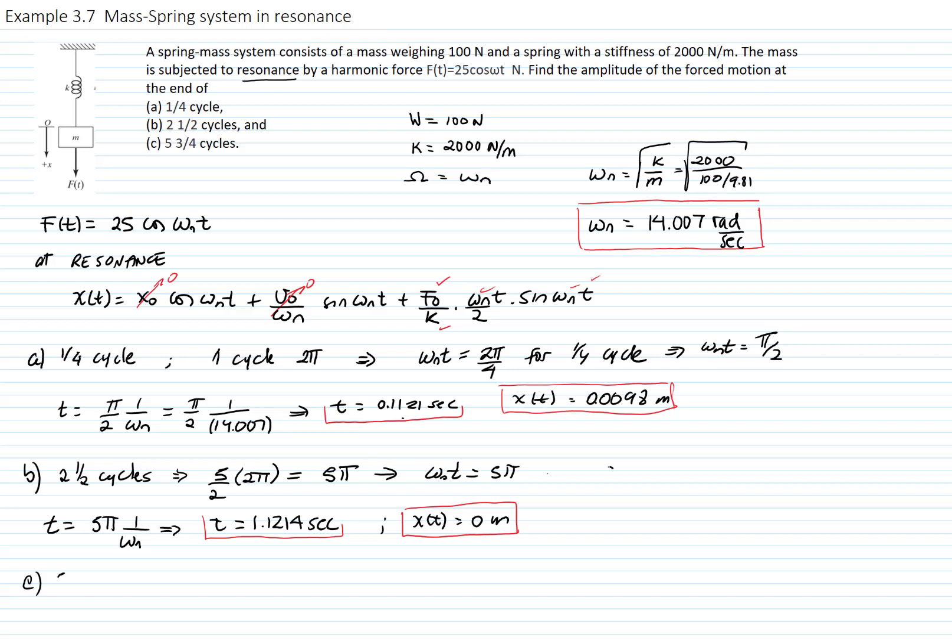The last one we want to find is for 5 and 3/4 cycles. That means 23/4 times 2π, which is one cycle, and that equals 11.5π.